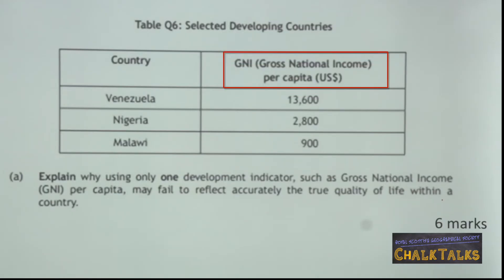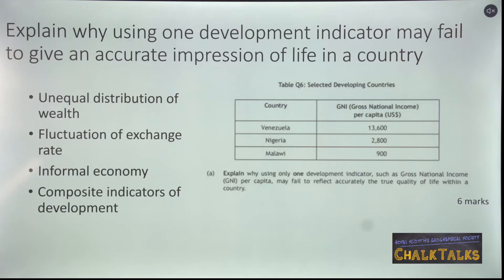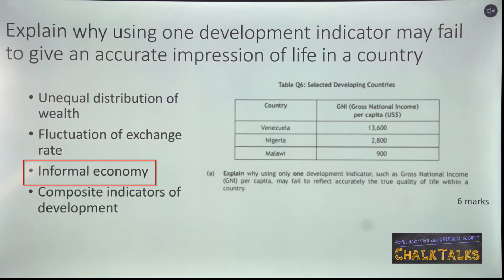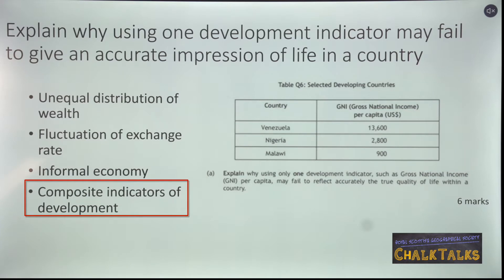GDP or GNI per capita are always expressed in US dollars, even though exchange rates fluctuate continually. GDP and GNI per capita also do not take into account the informal economy — that's people who don't declare or pay tax on their earnings — which can generate a large proportion of wealth in some developing countries. They also don't include subsistence agriculture. Composite indicators such as the Human Development Index or the Physical Quality of Life Index give a more rounded picture by combining a number of different indicators of development.